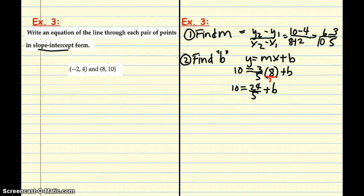So, I know that I need a common denominator with 24 fifths and 10. So, that means 10 actually ends up becoming 50 fifths. Now, we just use what we know about solving equations. I'm going to take 24 fifths from both sides. And, 50 minus 24 is 26. And, my denominator is 5.